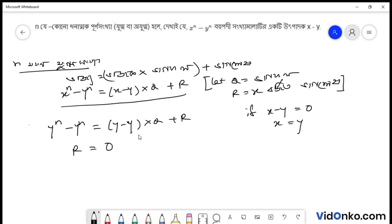And then what kind of value is that? r equals 0 means that what kind of value is that? The remainder is 0 for x to the power n minus y to the power n.